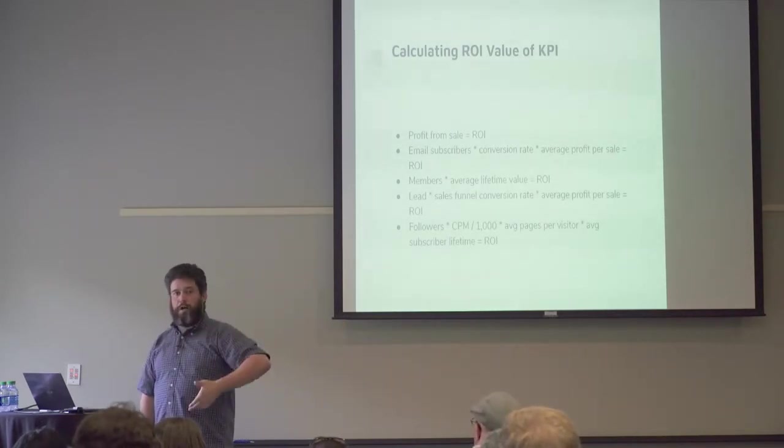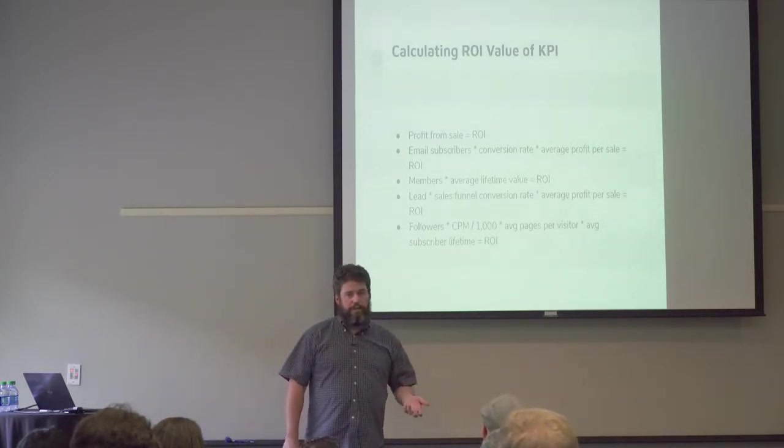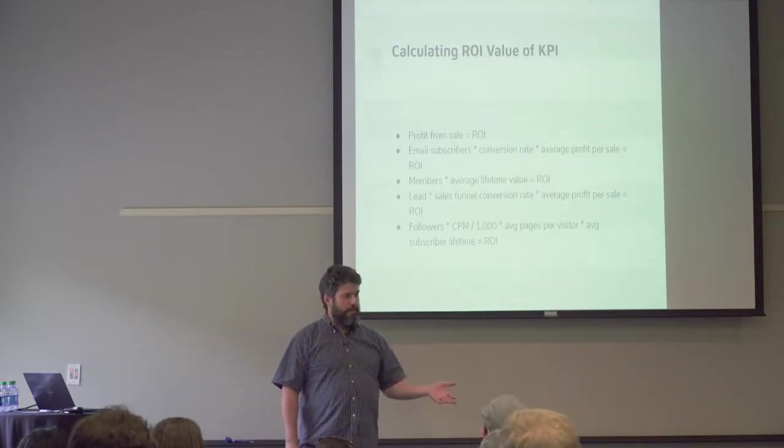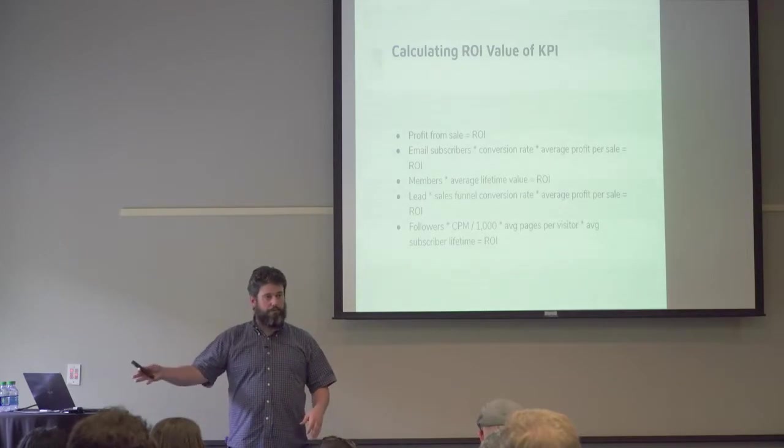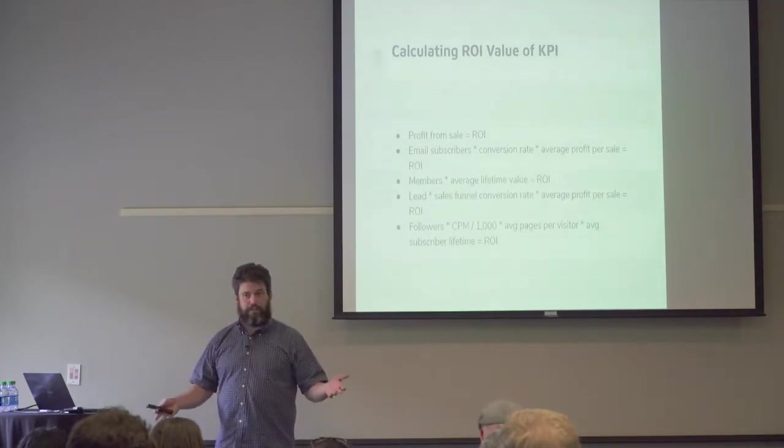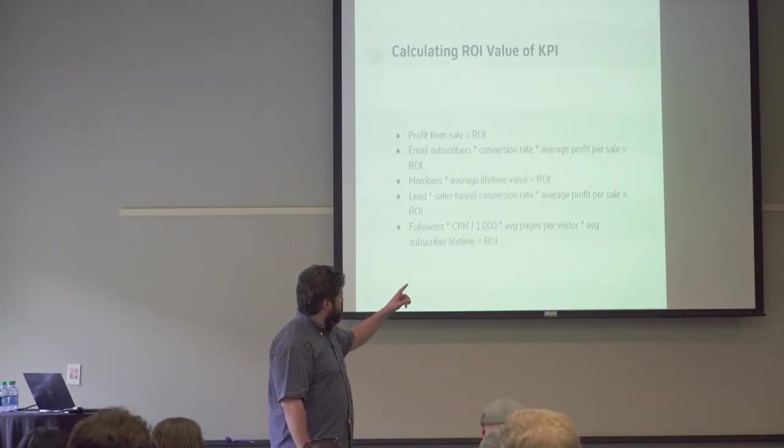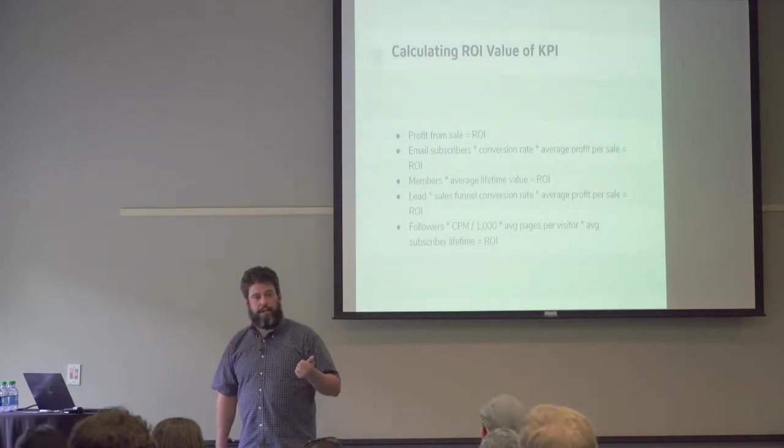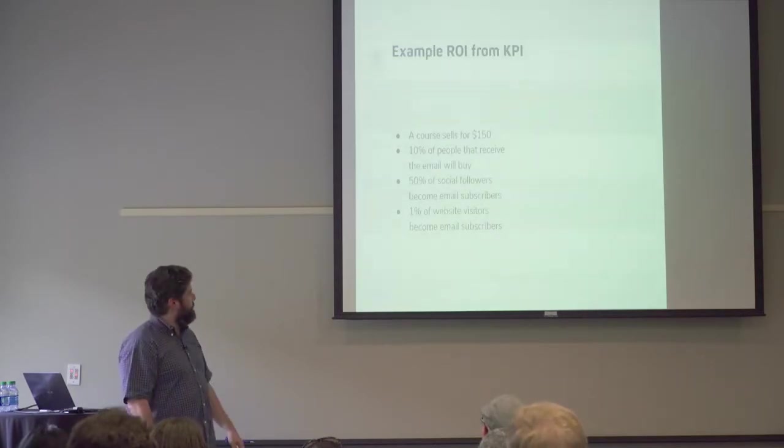A lot of times it's a good idea to layer multiple different business models. So you may have one business model where you're getting people to view and click on ads, but then you have another piece where you get them to subscribe to your email list and you make different offers through that email list. So you have multiple pieces that create a virtuous cycle.